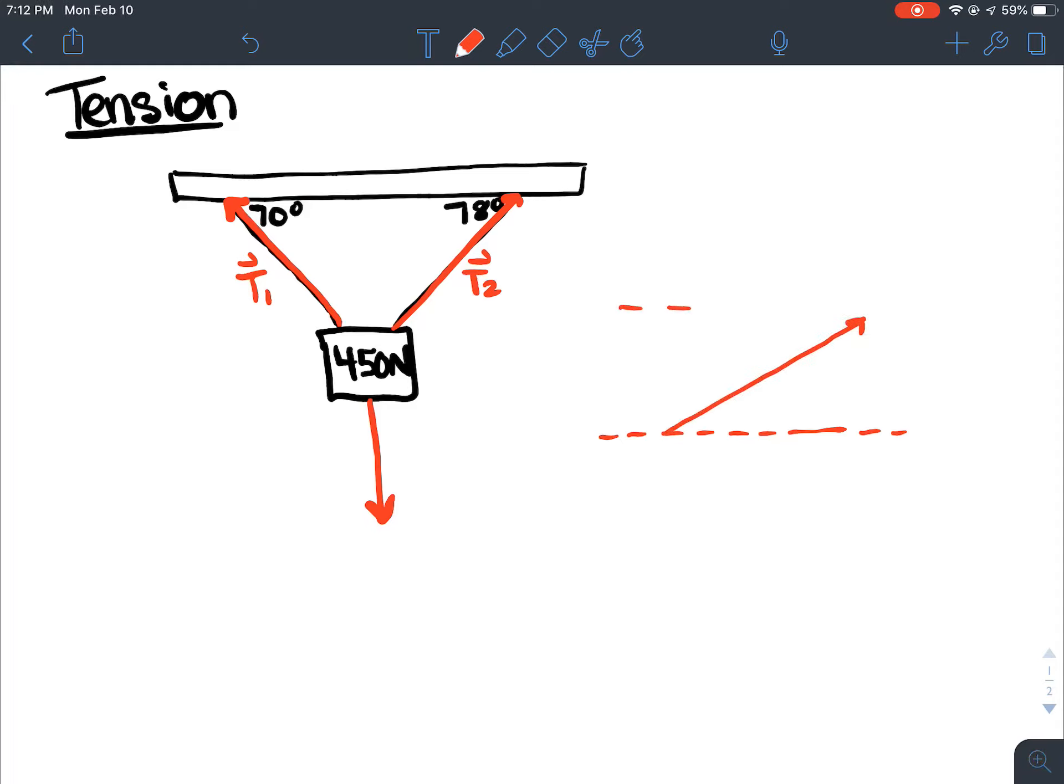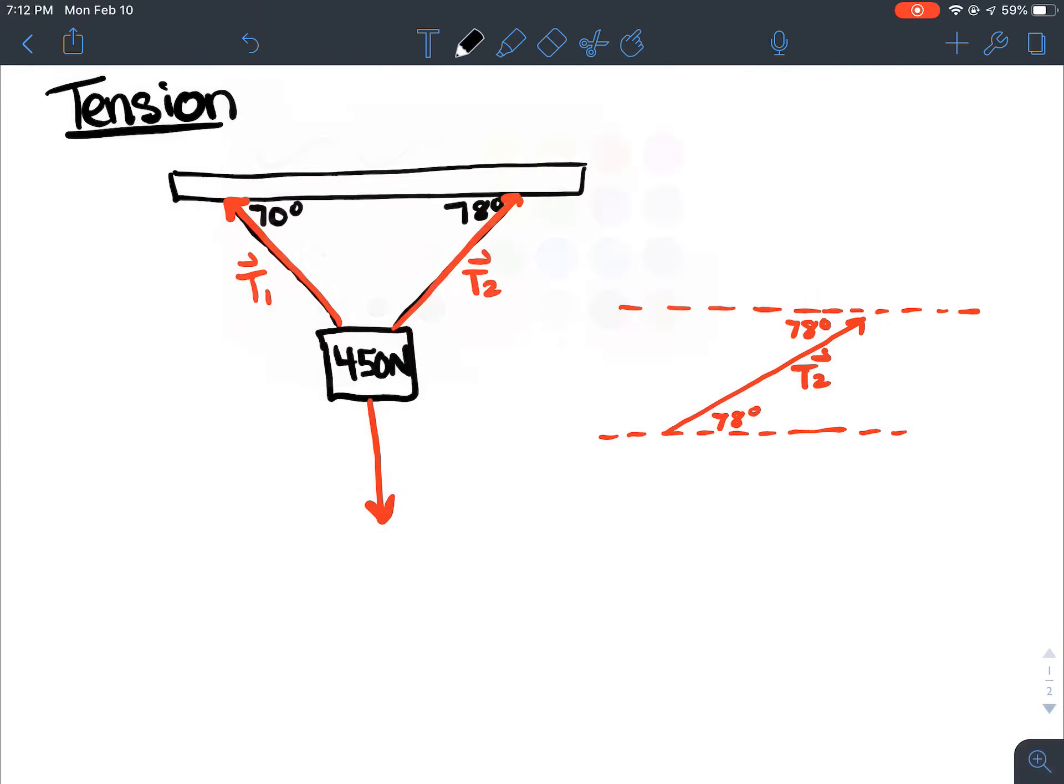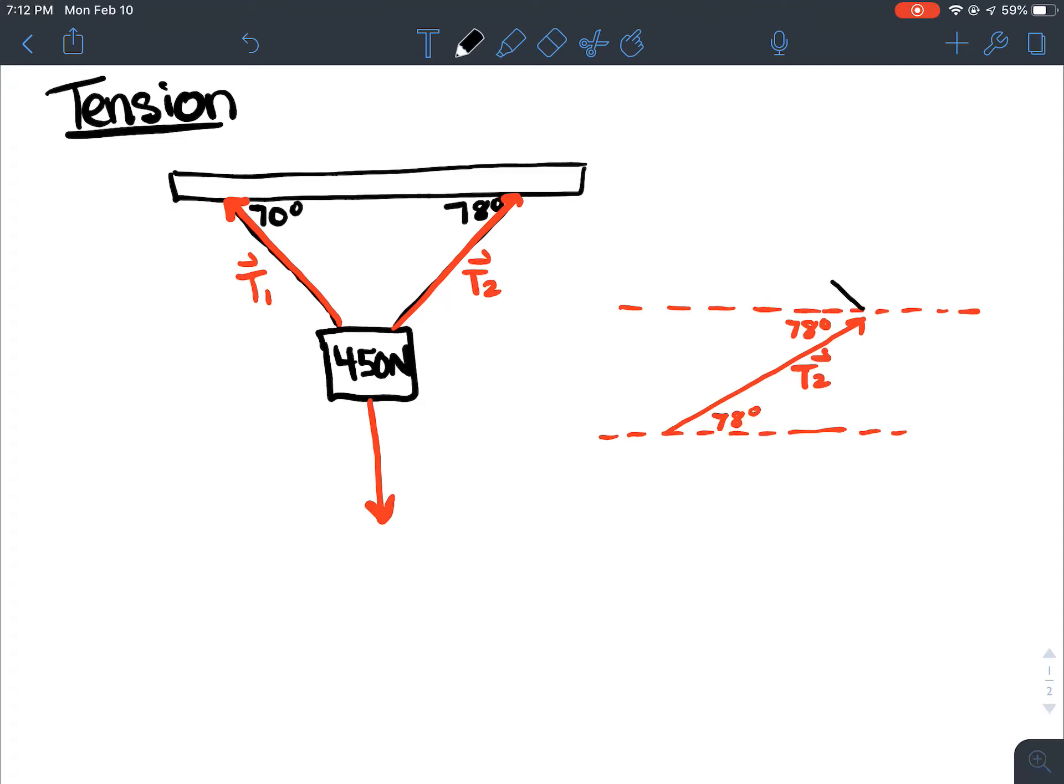We know that T1 plus T2 must equal the downward force, because that's why it's not moving. So we've got this vector here at an angle of 78, which means this would be 78 also. So this is our T2 vector. And then we've also got T1, which is going in this direction. And this one is at an angle of 70 to the horizontal, so that would be 70. And then we also know that our downward force must have these two tensions.